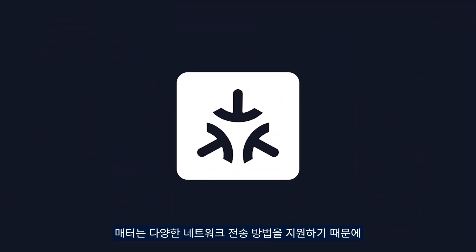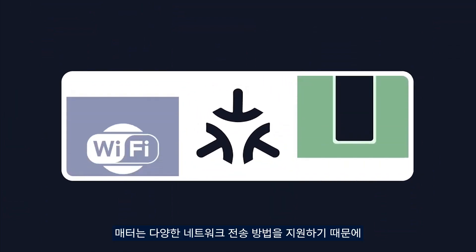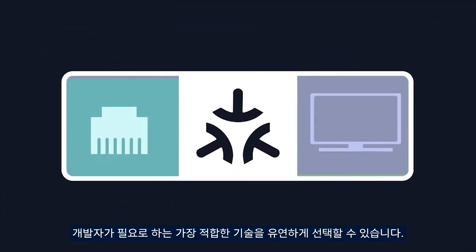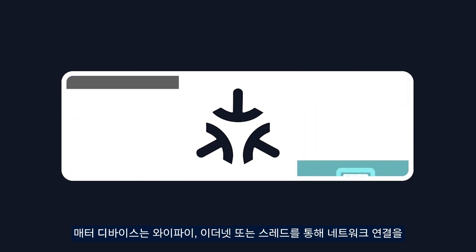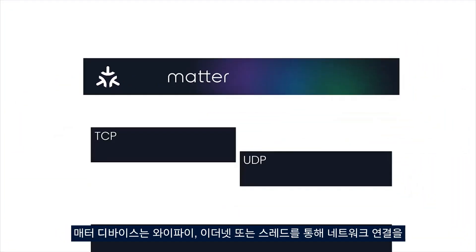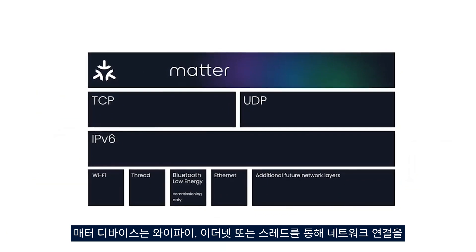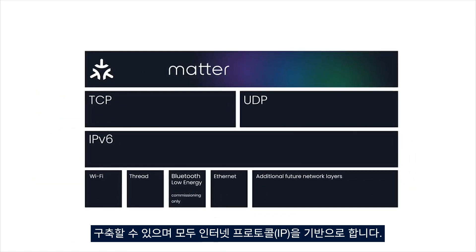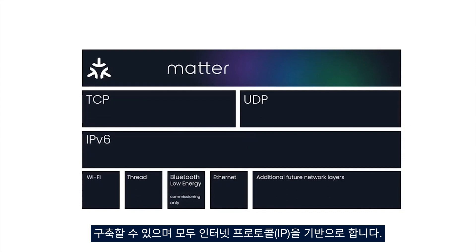Matter supports multiple network transports, giving you the flexibility to use the best technology for your use case. Matter devices can use Wi-Fi, Ethernet, or Thread for their network connection, all of which are built on Internet Protocol or IP.